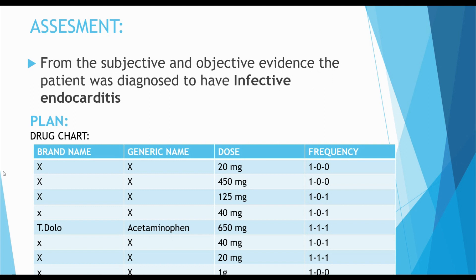P is the Plan — what we are going to do. Let's talk about the drug chart. In the drug chart, we have the brand name, generic name, dose, and frequency. We also have a column for the route of administration — Oral, Injection, IV, subcutaneous, intramuscular, or intravenous. For example: Tablet Dolo, Acetaminophen, 650mg, three times a day.